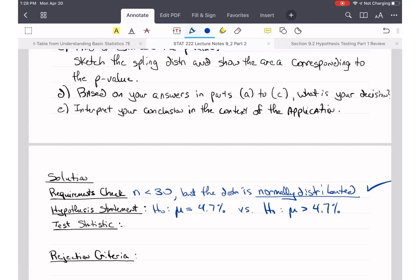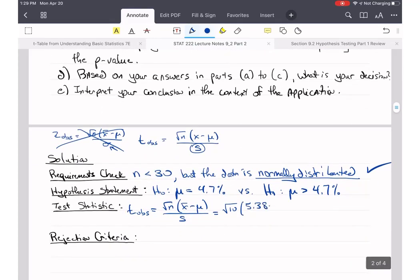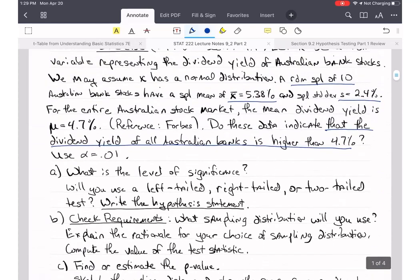But our test statistic is different because we have S. On our formula sheet, we'll have Z observed equals square root of N, X bar minus mu over sigma. And we'll have T observed, square root of N, X bar minus mu over S. If we don't have sigma, we can't use this formula. We have S, so we're going to use this formula. I'm always looking for you to write down the test statistic, the formula, and then plug in. So this is going to be the square root of N, which was 10, I believe. X bar was 5.38 minus mu right here. In our null hypothesis, we see what mu is, 4.7, divided by S, which is 2.4%.